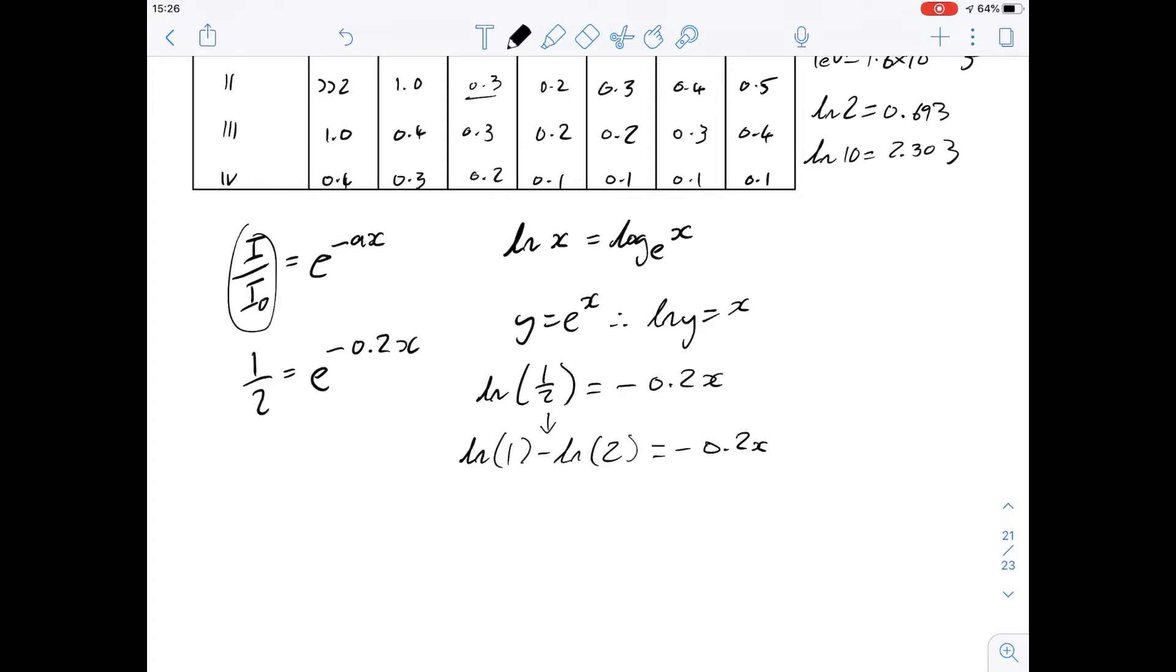Another log rule you might know is that the log of 1 is always going to be 0 and a log really asks what power do you have to raise something to to get the answer in the brackets here and anything to the power of 0 is 1. So we know that the log of 1 is always going to be 0 minus 0.693 equals minus 0.2x. We can get rid of some of these minuses and say that minus 0.2x is equal to 0.693.